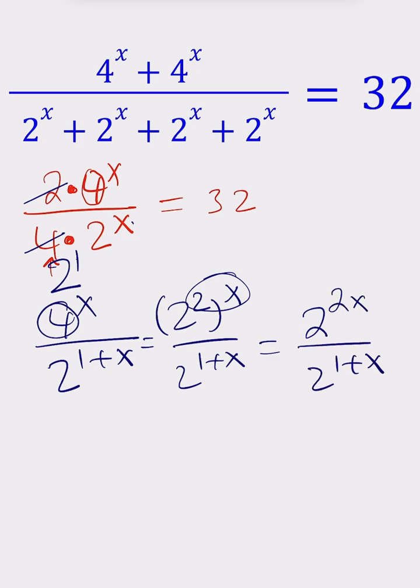We have a division problem. Subtract the exponents. You get 2^(x-1) equals 32, but 32 is 2^5.